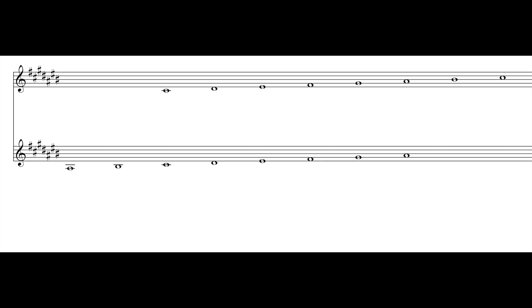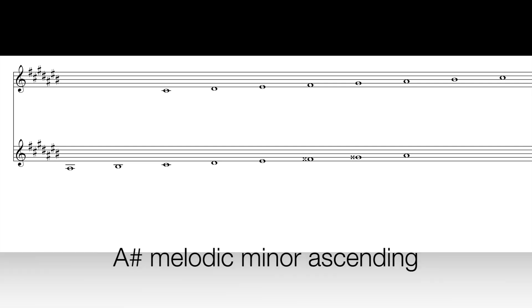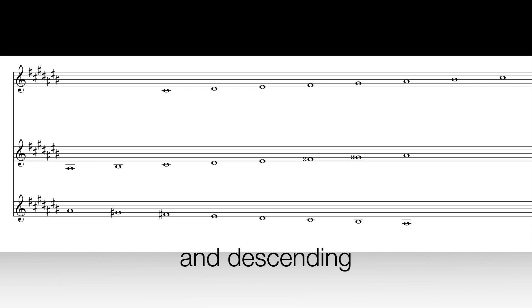This is as far as the syllabus goes for grade five music theory, but there is one more scale with seven sharps. C sharp major and its relative A sharp minor. To create the harmonic minor scale of A sharp, we sharpen the seventh note, already G sharp, to G double sharp. To create the melodic minor scale of A sharp, we also sharpen the sixth note, already F sharp, to F double sharp — so we have two double sharps in this melodic minor scale. On the way down, we have to remember to cancel them out.